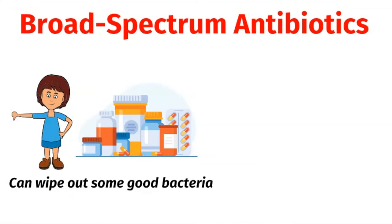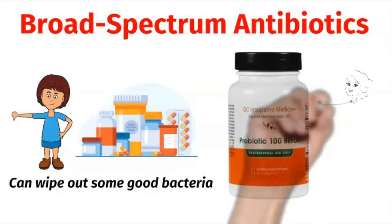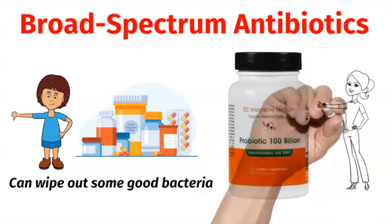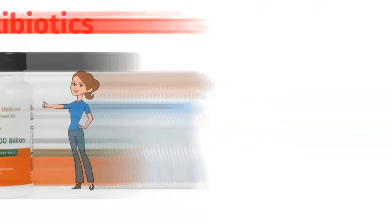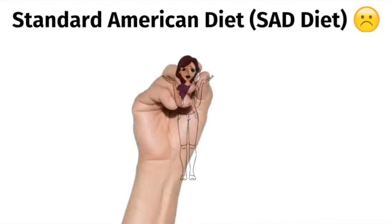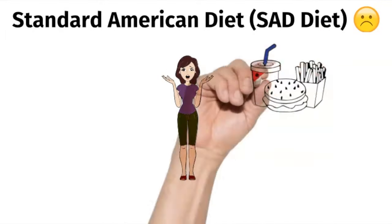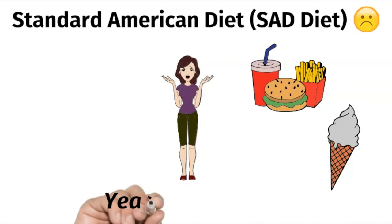Antibiotics can wipe out some of the good bacteria, tipping the balance in favor of yeast overgrowth. This is why I always advise my patients to take probiotics when taking an antibiotic, to protect the balance of bacteria in the microbiome. On top of broad spectrum antibiotics, we have another problem: the standard American diet, also known as the SAD diet.